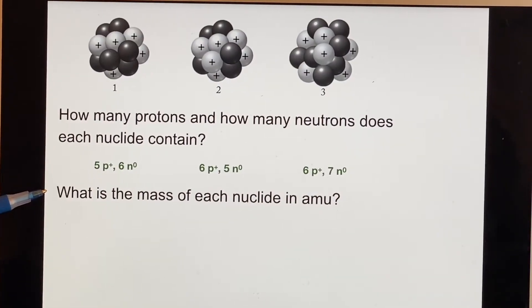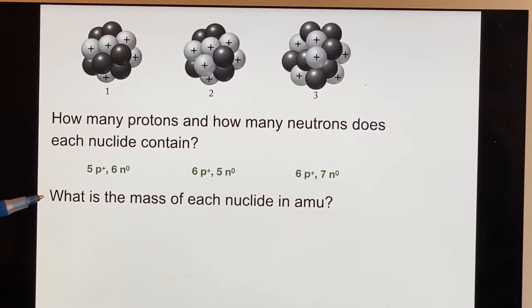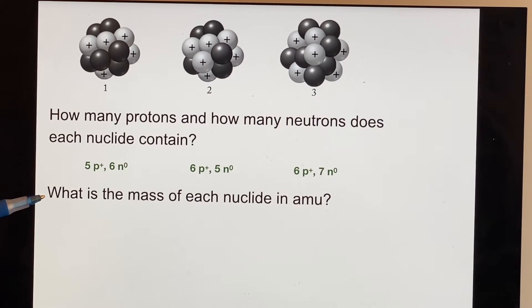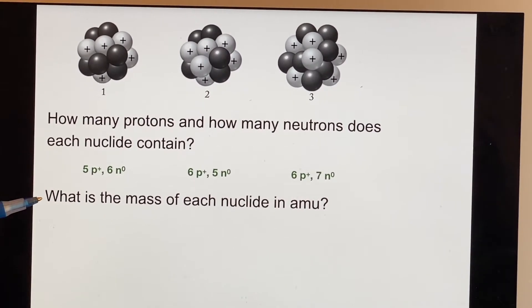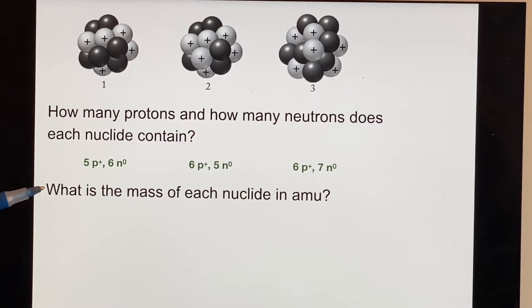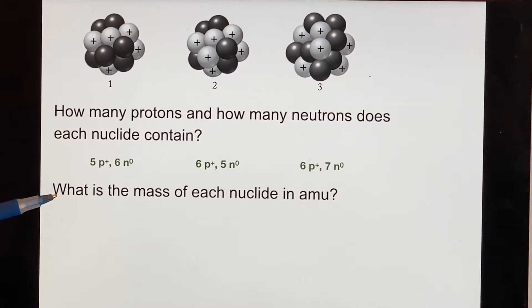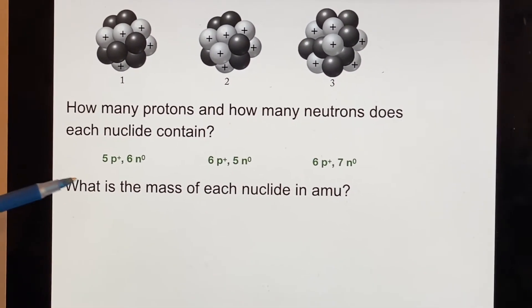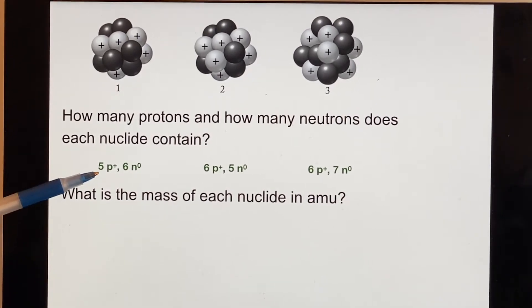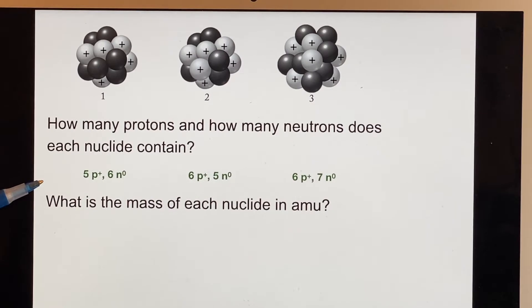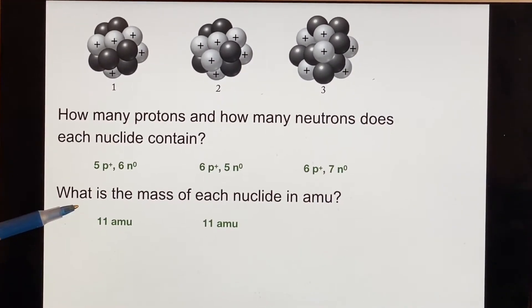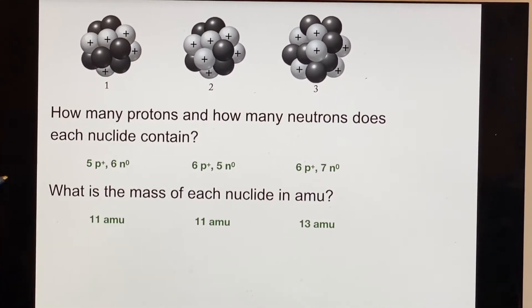One of the things that we use quite often is what's the mass. Now, the electrons are so light that they don't really contribute anything significant to the mass. So we can just say that protons and neutrons added together are going to give us a reasonable approximation of the mass. So 11, another 11, and 13.